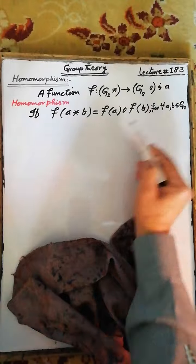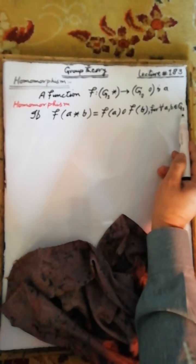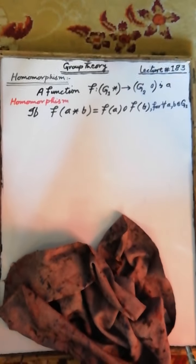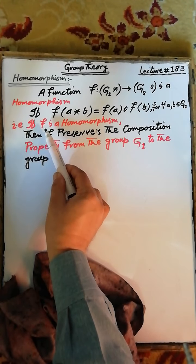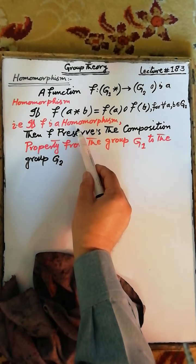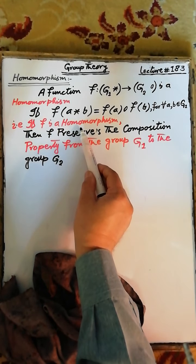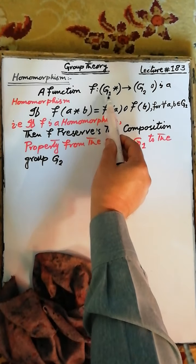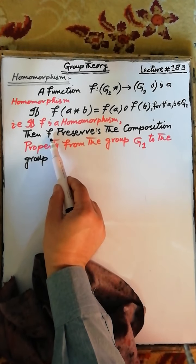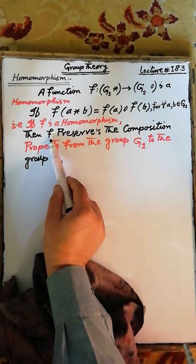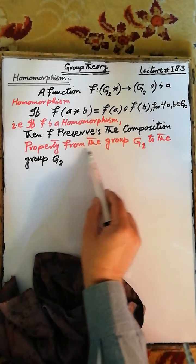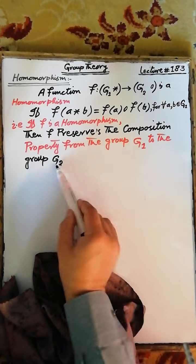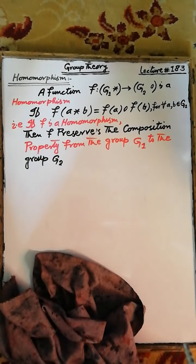For each a, b belonging to the group G1, if the function f is a homomorphism from the group G1 to the group G2, then the function f preserves the composition property from the group G1 to the group G2.